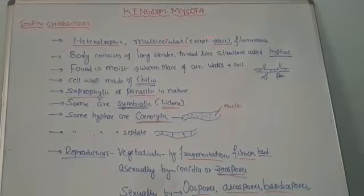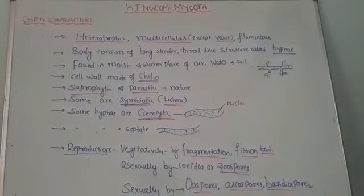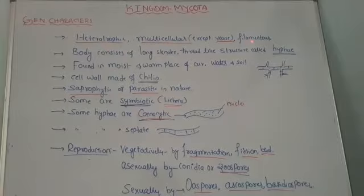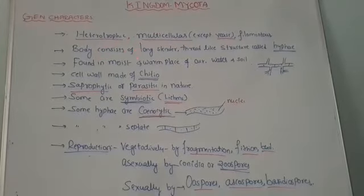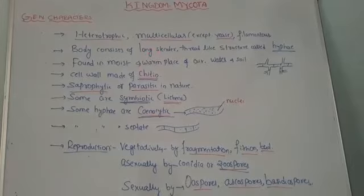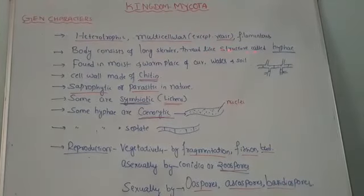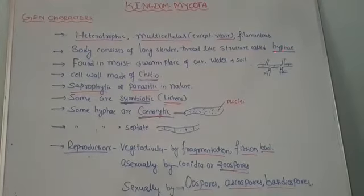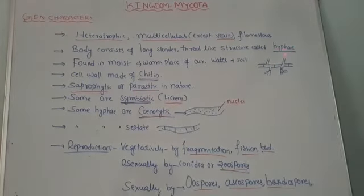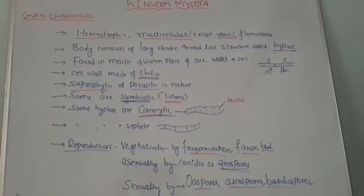Their body organization is in filamentous form. Filamentous means thread-like or hair-like structure. They are very smooth, elongated, and slender — meaning long, smooth, thread-like structures. That thread-like structure is called a hypha. The plant body of fungi is called hypha. Such a group of hyphae joined together form a structure called mycelium. Hyphae is the plural word and hypha is the singular word.